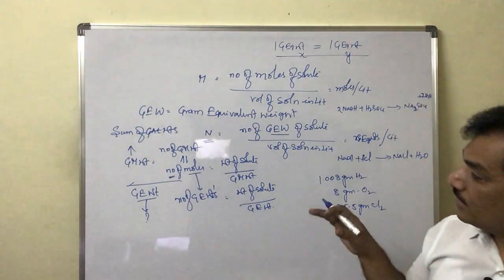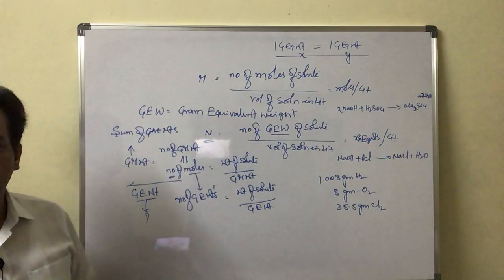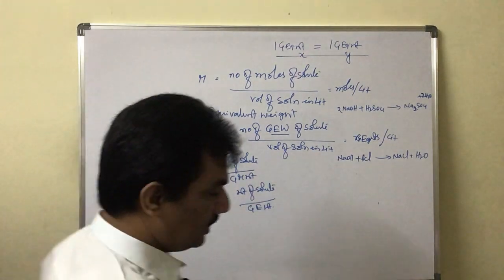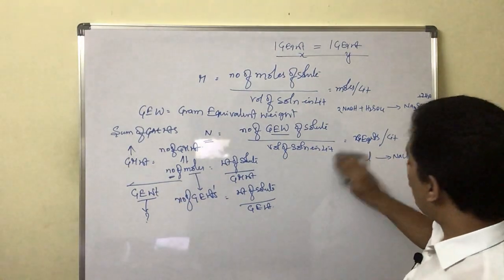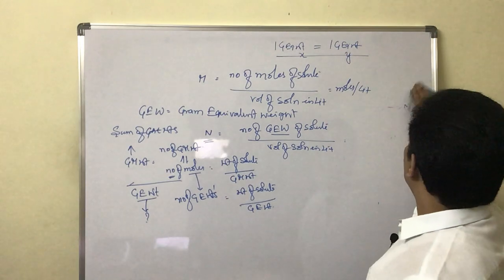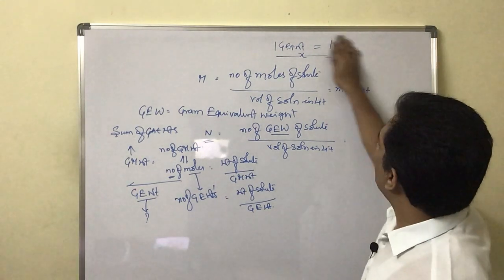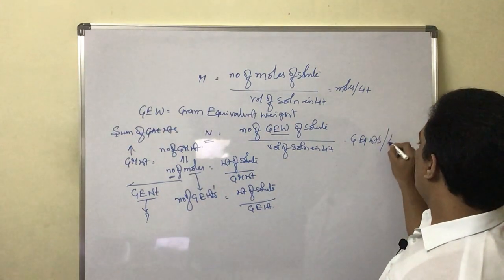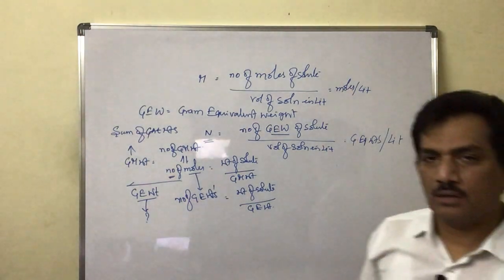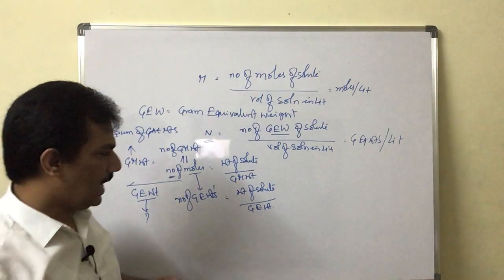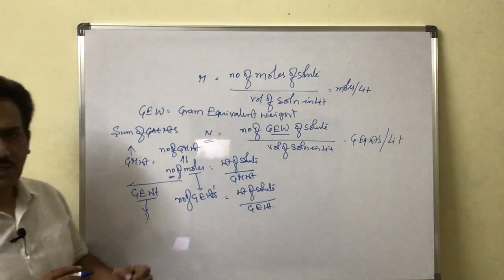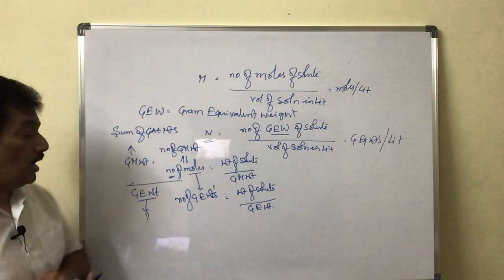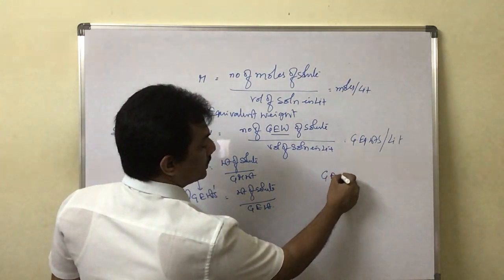That is the condition — that is why normality has its own priority in expressing concentration terms. Gram equivalent weight is the weight of any substance that can react or replace 1.008 grams of hydrogen, or 8 grams of oxygen, or 35.5 grams of chlorine. But how do we actually measure this gram equivalent weight?